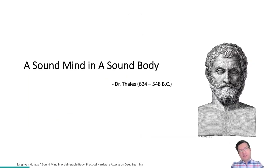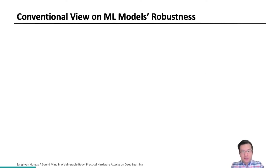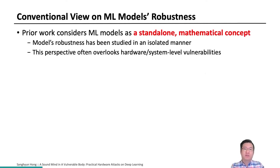So, now can we say that our models are safe? Let's revisit what Dr. Tallis said: a sound mind in a sound body. We soon realized there is still a question that remains unanswered: do we place a sound mind in a sound body? Answering this question requires breaking convention, and breaking convention requires a change in our perspective. The prior work mostly studied the security of a machine learning model, considering it as a standalone mathematical concept, and in consequence studied the model's robustness in an isolated manner. And more importantly, this perspective often overlooks the impact of hardware or system-level vulnerabilities.